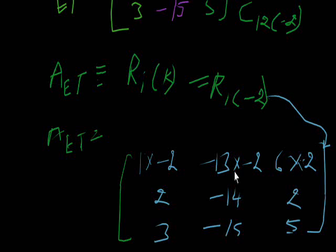The results are: minus 2, then 13 into 2 gives minus 26, and 6 into 2 gives minus 12. All other rows will remain the same.